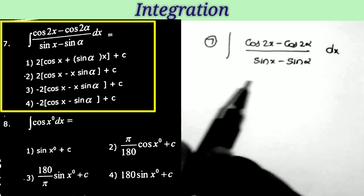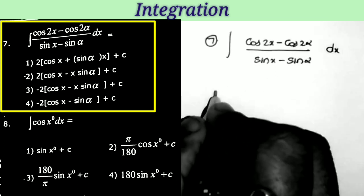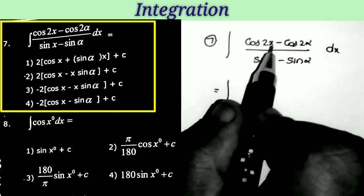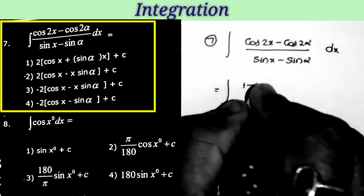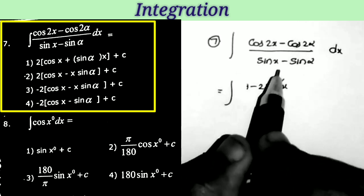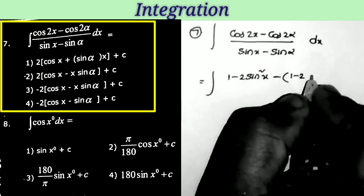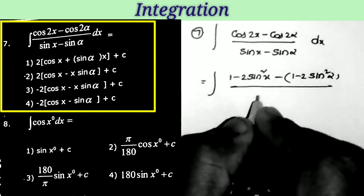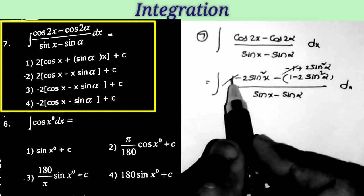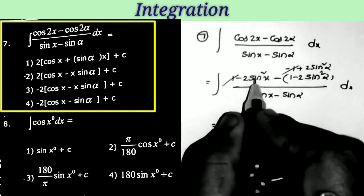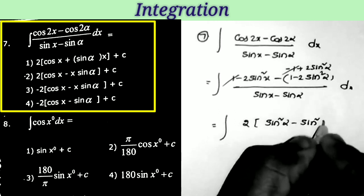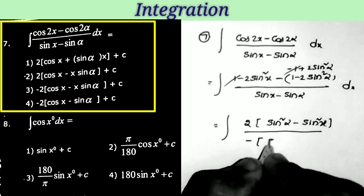Next question: integral of (cos2x − cos2α)/(sin x − sin α) dx. Since we have sin x and sin α in the denominator, I convert the numerator using the cos2 formula in terms of sin. What is cos2x in terms of sin? 1 − 2sin²x. So numerator: (1 − 2sin²x) − (1 − 2sin²α). The −1 and +1 cancel, leaving 2sin²α − 2sin²x. Taking 2 common: 2(sin²α − sin²x). From the denominator, taking minus common: sin α − sin x becomes −(sin x − sin α).